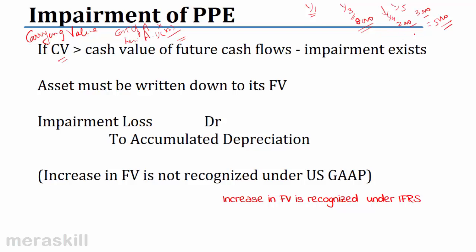The cash value of the future cash flows is said to be the fair value — the sum of the future cash flows is the fair value. I compare the fair value with the carrying value. If carrying value is more than fair value, that means the benefit I am going to get is lower. Then bring down the carrying value — you do not have an asset which is worth so much. The asset must be written down to its fair value.